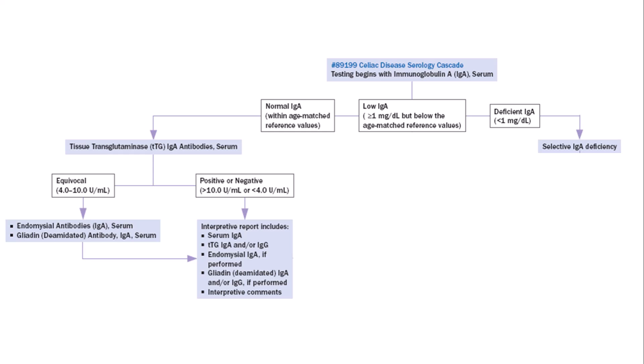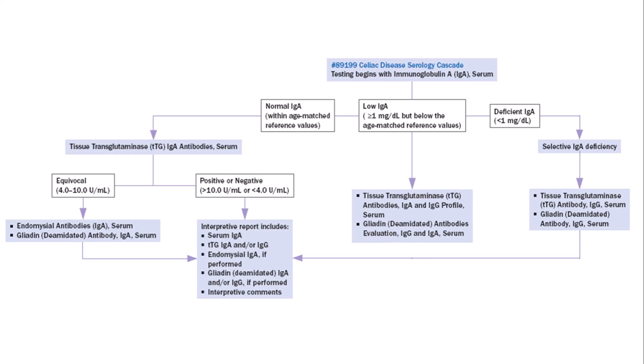On the other side of the cascade, for those individuals who have no detectable IgA, TTG and deamidated gliadin testing are performed, but only the IgG isotypes, and these results are released as part of the final report along with total IgA quantitation. For those individuals with low but detectable IgA, testing for TTG and deamidated gliadin for both IgA and IgG isotypes is performed. This cascade is designed to identify patients who may have celiac disease and in whom a biopsy would be suggested. It is not applicable to patients following a gluten-free diet due to the possibility of a false negative serology test result.